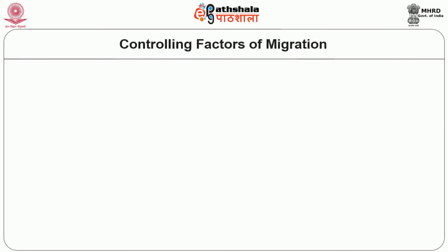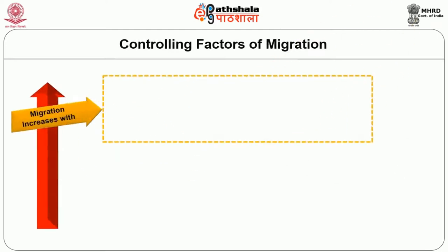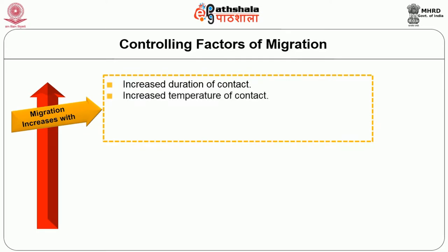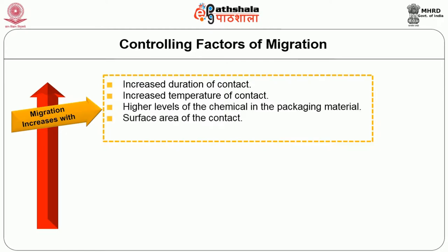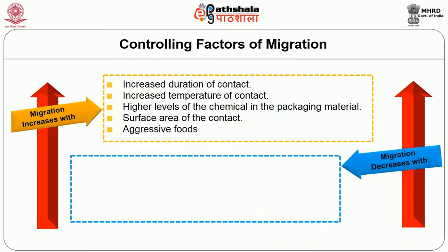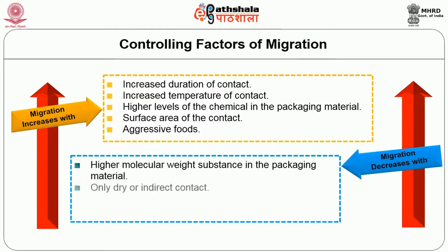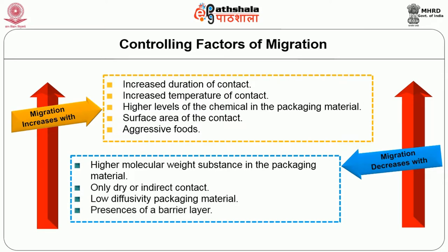Let us now look at the controlling factors of migration. Migration increases with increased duration of contact, increased temperature of contact, higher levels of chemicals in the packaging material, surface area of contact, and aggressive foods. Migration decreases with high molecular weight substances in the packaging material, only dry or indirect contact, low diffusivity packaging material, and presence of a barrier layer.